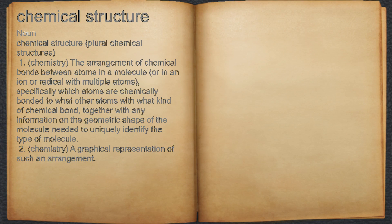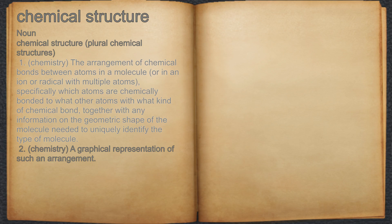Chemical Structure. Noun. 1. Chemistry: The arrangement of chemical bonds between atoms in a molecule, or in an ion or radical with multiple atoms — specifically which atoms are chemically bonded to what other atoms with what kind of chemical bond, together with any information on the geometric shape of the molecule needed to uniquely identify the type of molecule.